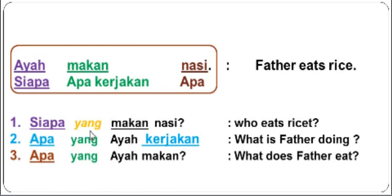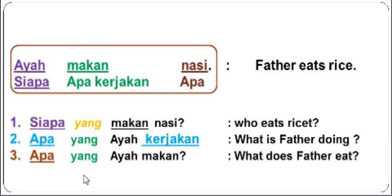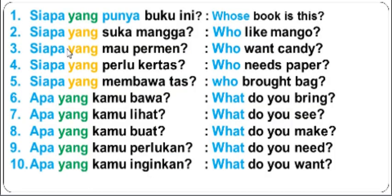Remember, the yellow 'yang' means that it is optional — you can put it or not. But the green one, I suggest you to put it because if you do not put it, it will sound weird or not nice.